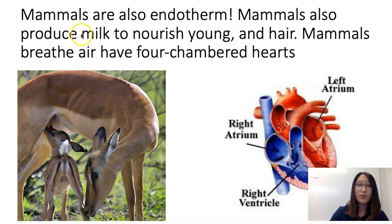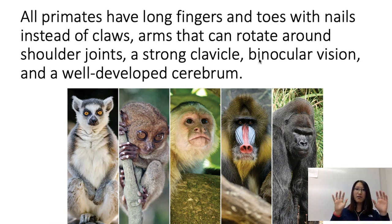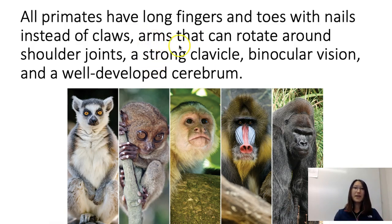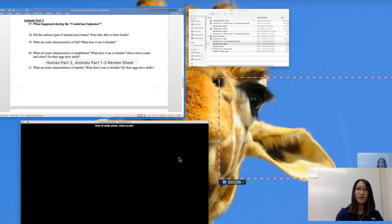Mammals produce milk to nourish the young, and they also have hair. Mammals breathe air and have four-chambered hearts. Lastly, primates have long fingers with nails instead of claws for climbing, arms that can rotate around the shoulder joint, a strong clavicle, binocular vision, and a well-developed cerebellum, which is a part of the brain.